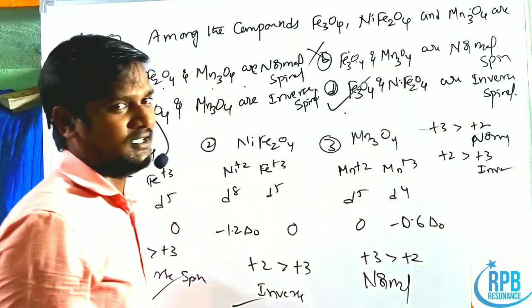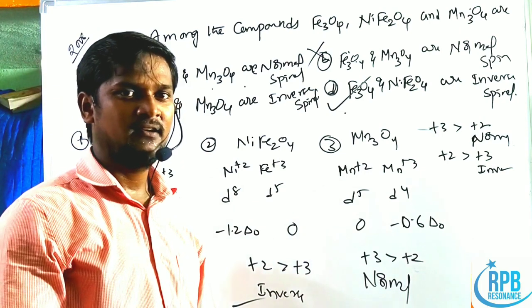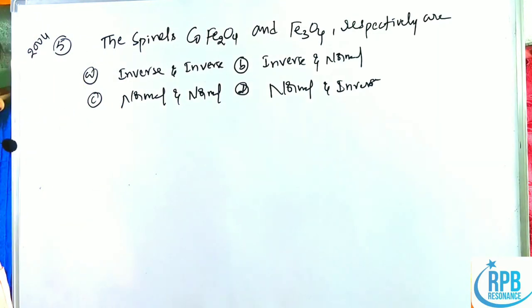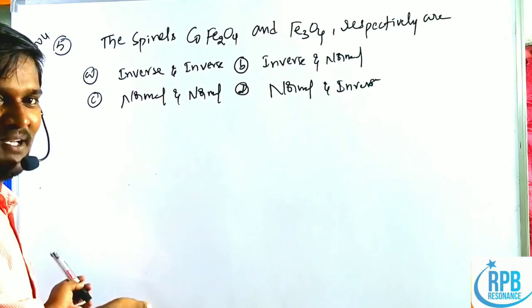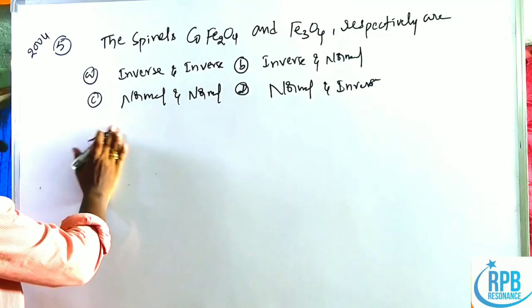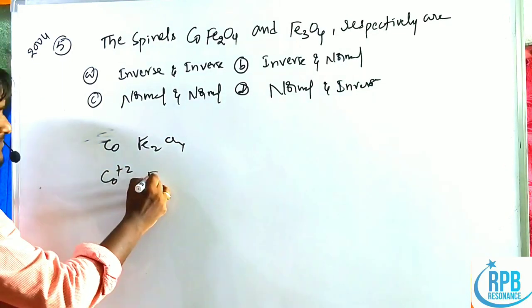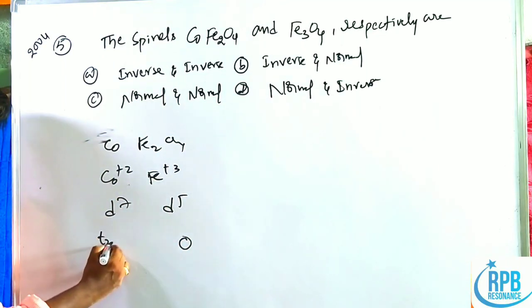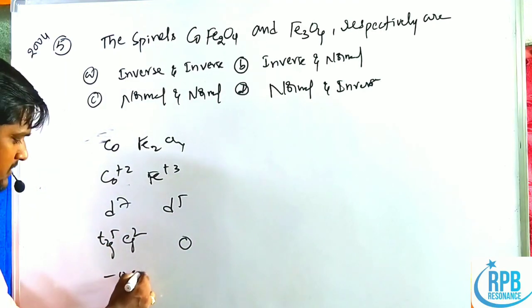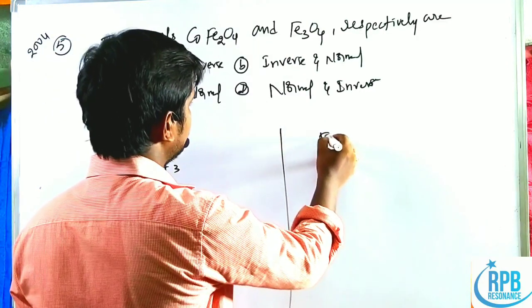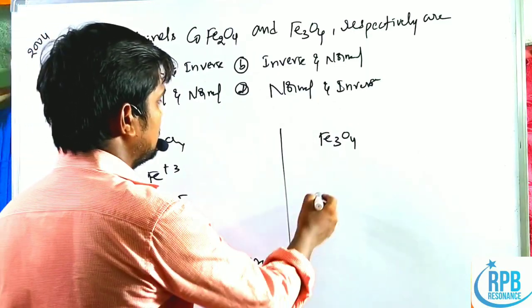Now the fifth problem: CoFe₂O₄ and Fe₃O₄ — are they inverse/inverse, inverse/normal, normal/normal, or normal/inverse? For CoFe₂O₄: Co²⁺ is d⁷ (t₂g⁵eg²), CFSE = −0.8 ΔO; Fe³⁺ is d⁵ (CFSE = 0). Since A²⁺ CFSE > B³⁺ CFSE, CoFe₂O₄ is an inverse spinal.